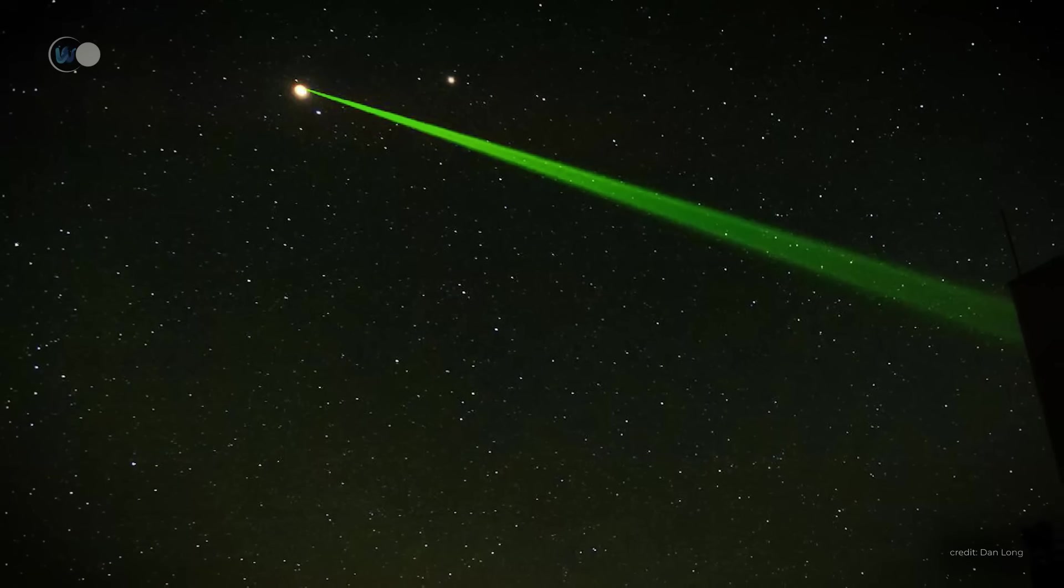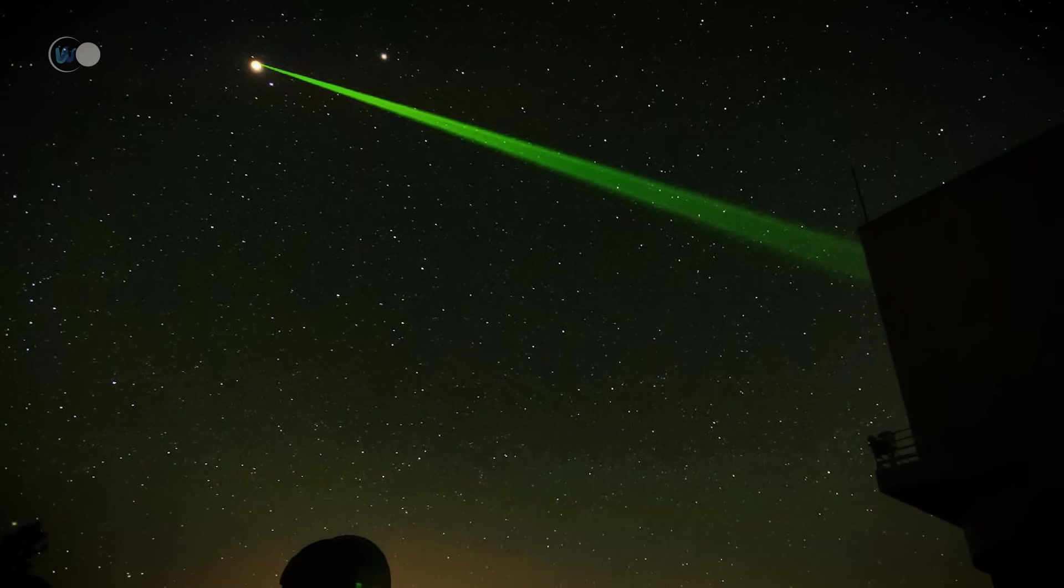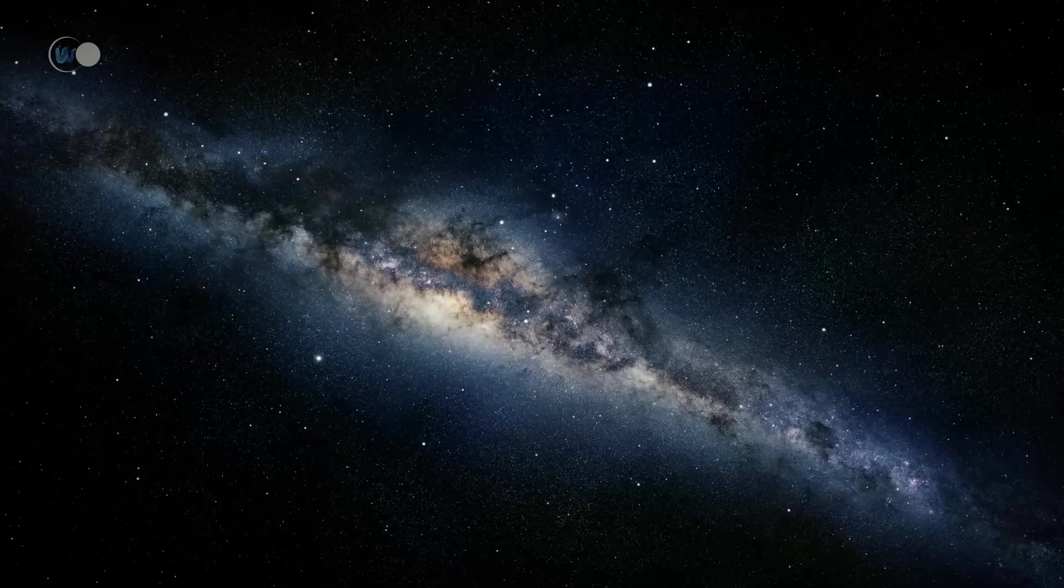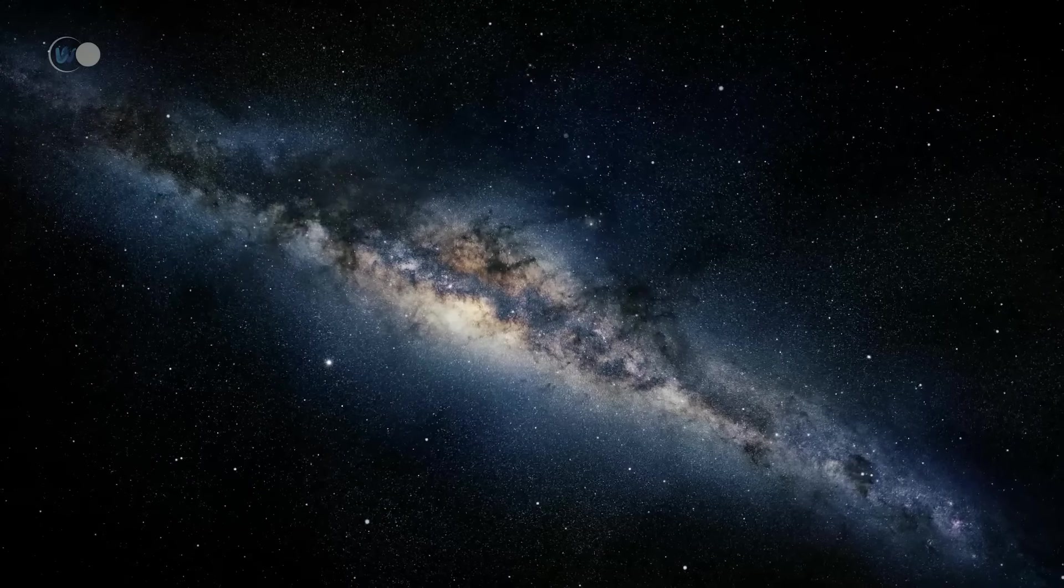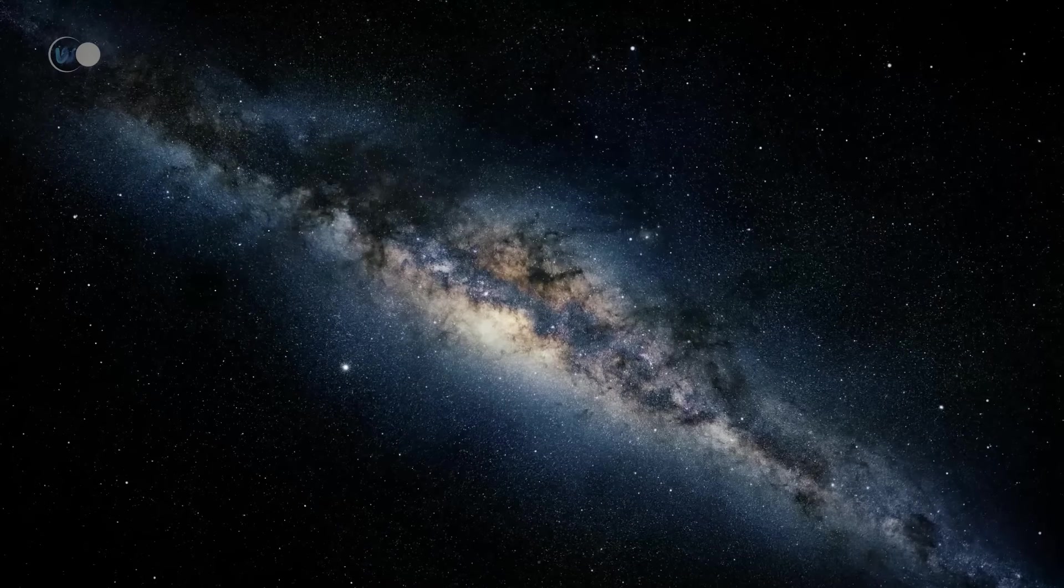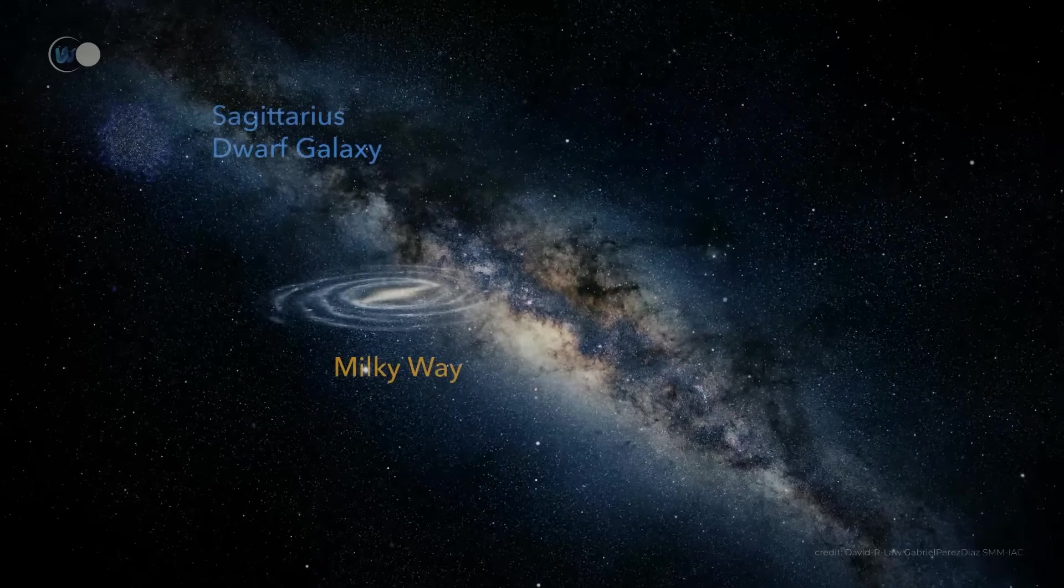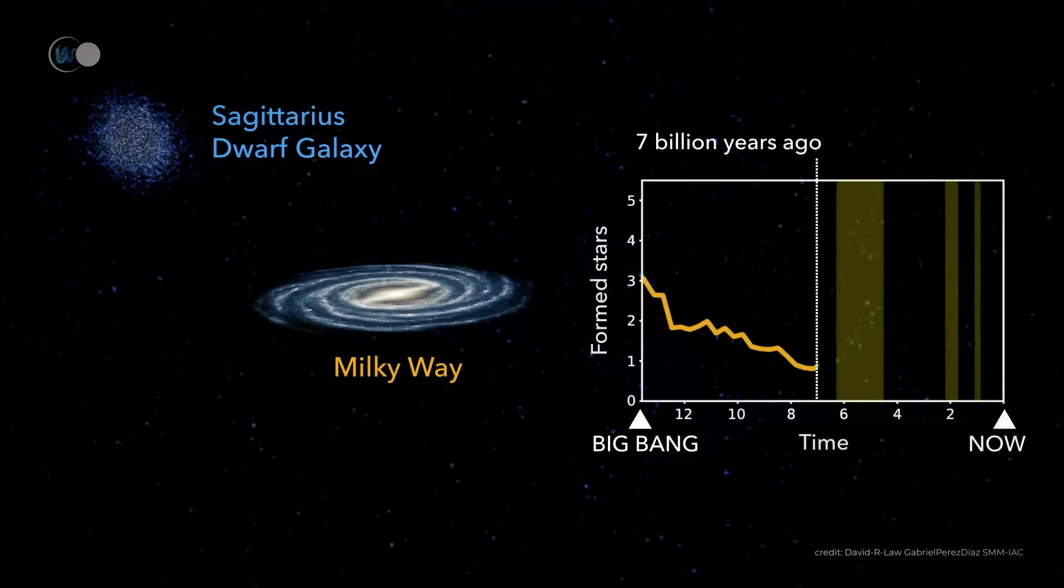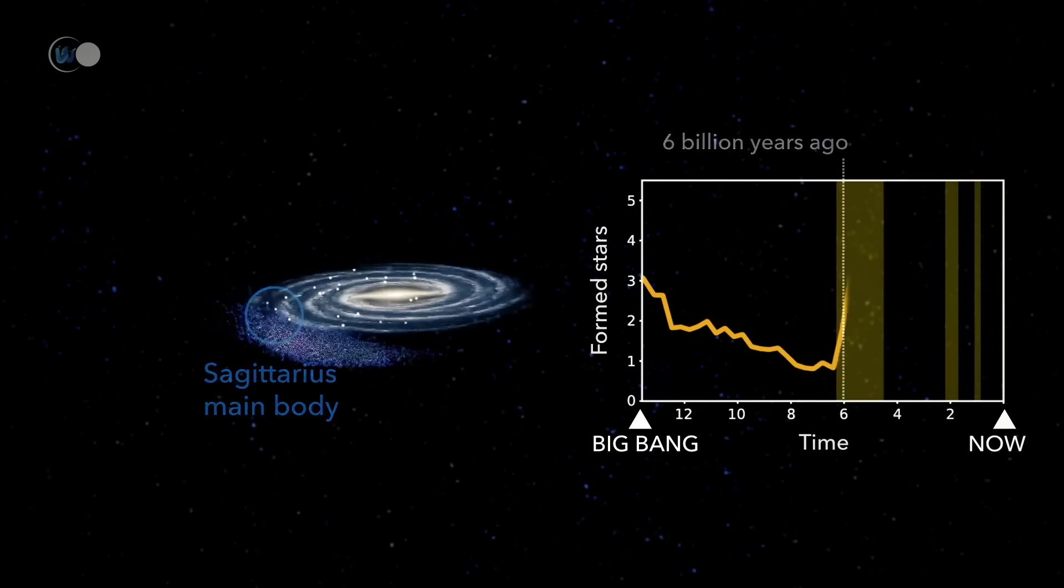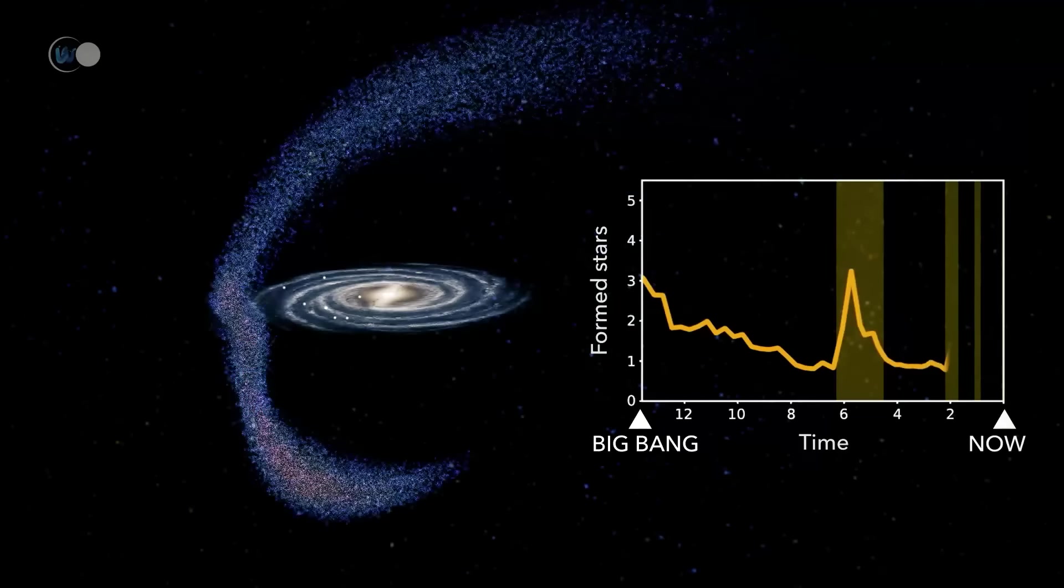For 10 years, data were collected through the Apache Point Observatory Telescope in New Mexico. More than 500,000 stars in the Milky Way were studied through their chemical composition and velocity measurements. Scientists were thus able to determine which stars came from the Milky Way and which from the Heracles galaxy. Reconstructing the chronology of encounters between the Milky Way and other galaxies is crucial to understanding its current organization, which still bears the traces of this past cannibalism.